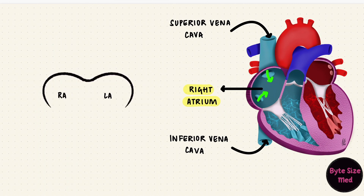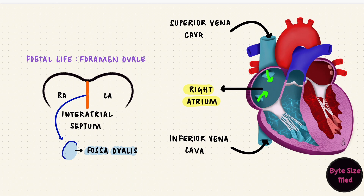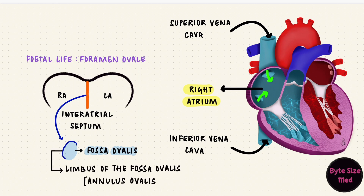The two atria are separated by a septum called the interatrial septum. During fetal life, there's actually a space in the septum called the foramen ovale — an oval foramen which helps blood move from the right atrium to the left. That's a shunt, and it's normal during fetal life, but it closes at birth. So in adults, what remains is an oval depression called the fossa ovalis, or the oval fossa, with its raised margin called the limbus of the fossa ovalis, also called the annulus ovalis.